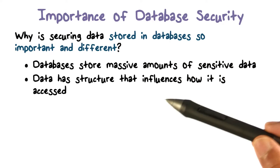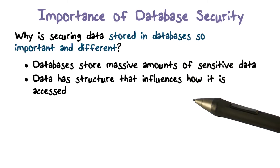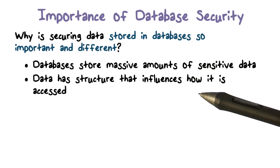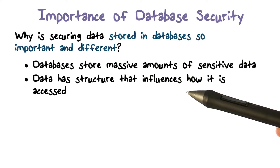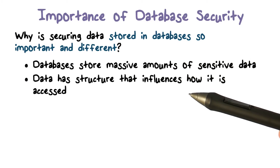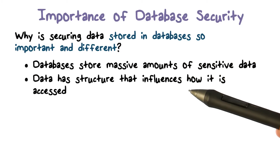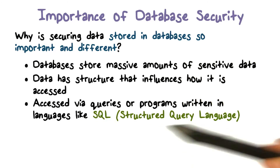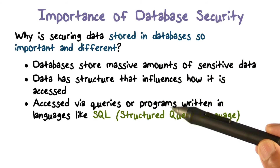The kind of examples I just talked about — data we have about customer records or health records — that data does have structure, and the structure actually influences how it's going to get accessed. For example, I may ask for information about all customers who purchased some number of things in the last two months. Asking this kind of query, we make use of the structure in the data to do that. A database stores structured data, and we can access it through programs called queries.